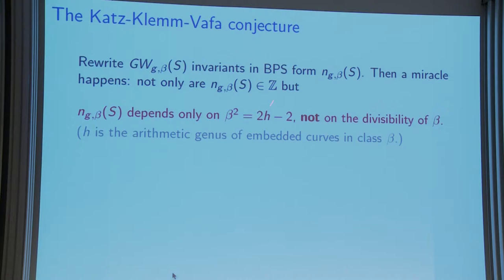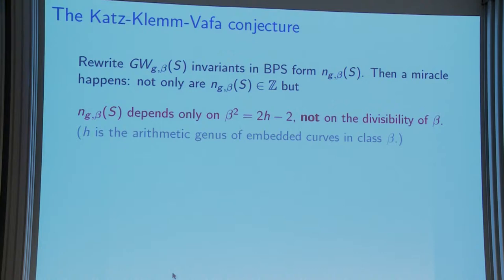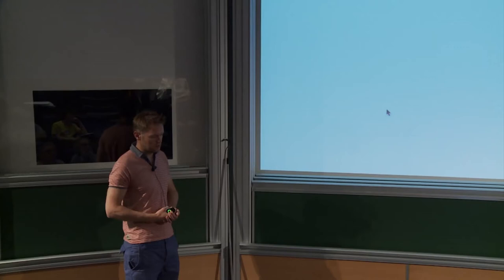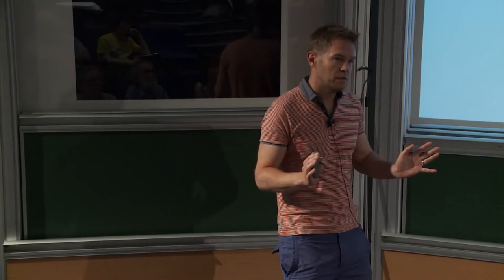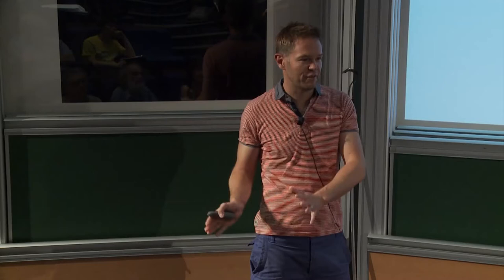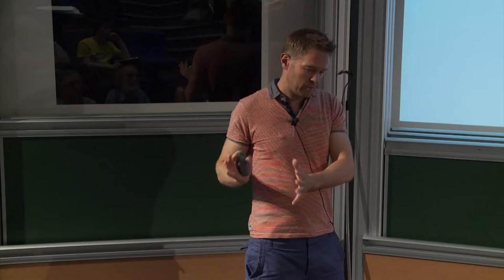Two miracles happen: not only do they turn out to be integers, but also they depend only on the square of the curve class, not on how divisible it is. It's clear that the Gromov-Witten invariants depend on both the square and the divisibility of the class. But these BPS invariants do not depend on divisibility — this is an incredible thing, showing BPS invariants are the right things to consider. So when looking at curves in two times a class, after subtracting the Gopakumar-Vafa multiple cover contributions, you can forget the homology class and go to a completely different primitive class with the same square and compute there.